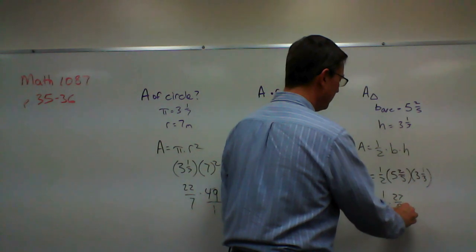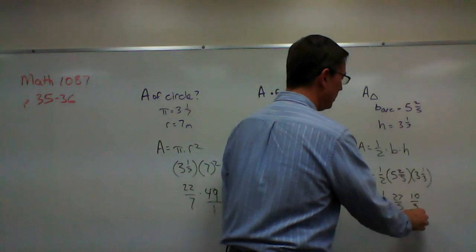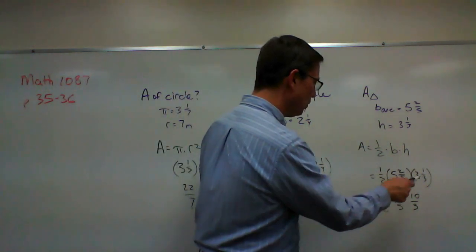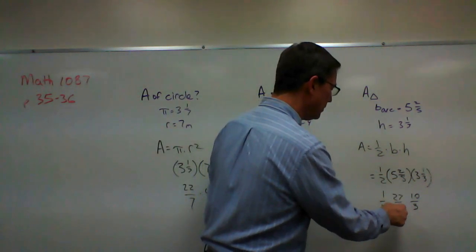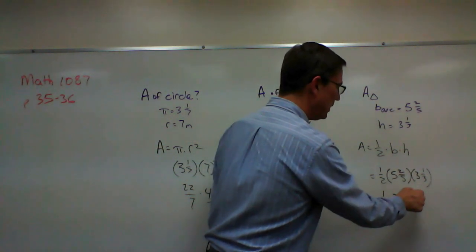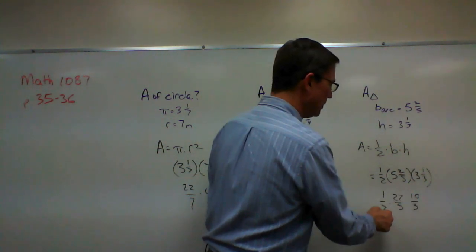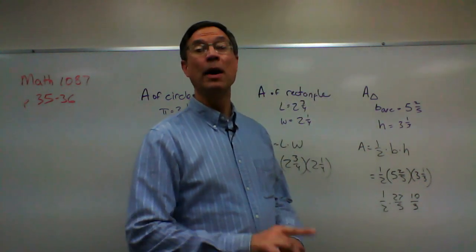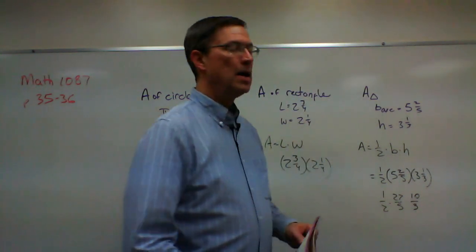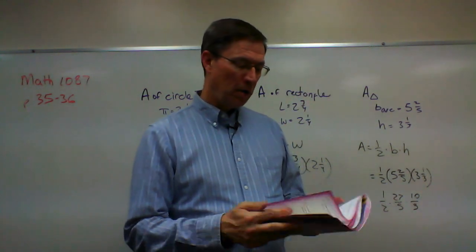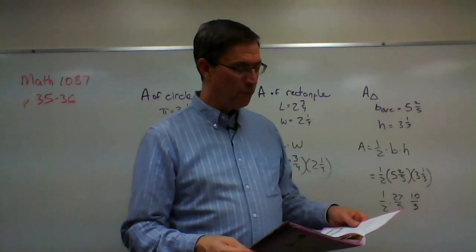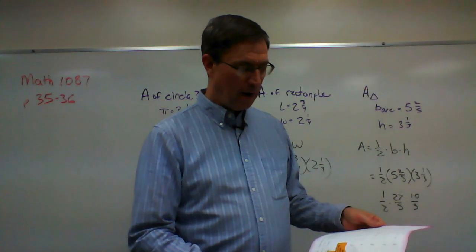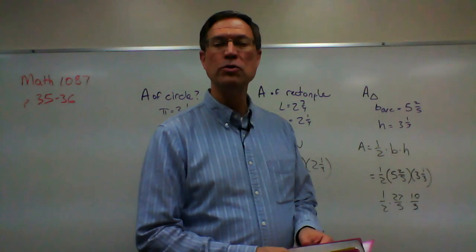So we have 27 over 5, times 10 over 3, times 1/2. Before multiplying, try to cancel: 5 cancels against the 10 giving 2, the 2 cancels against the 2, and 3 cancels against the 27. That makes it very easy to finish — I'll leave that for you. This should take you through page 37. I do want to talk about pages 38, 39, and 40 before you go any further.